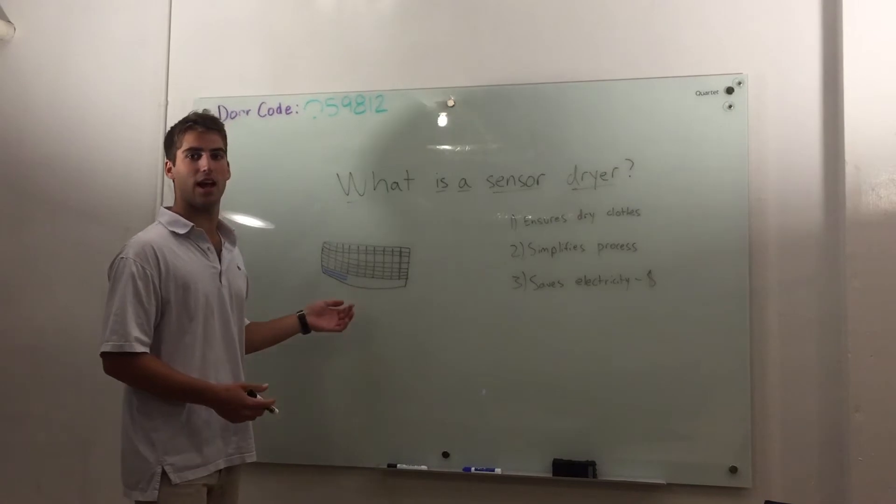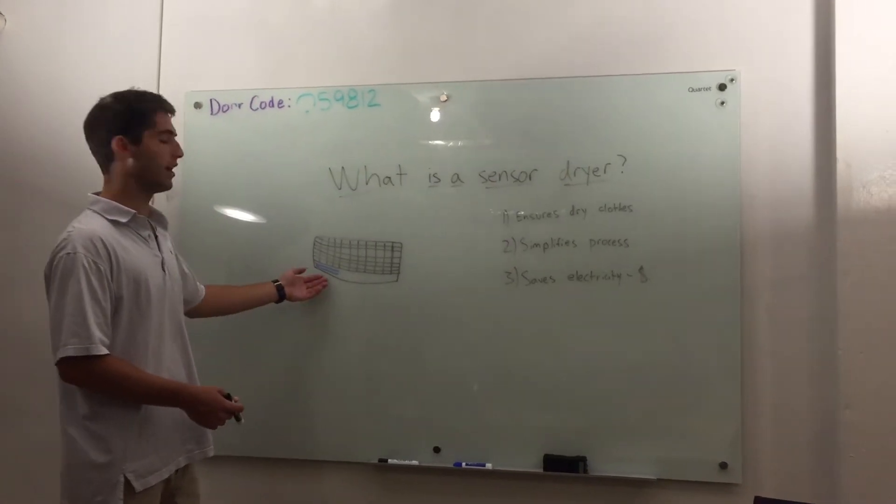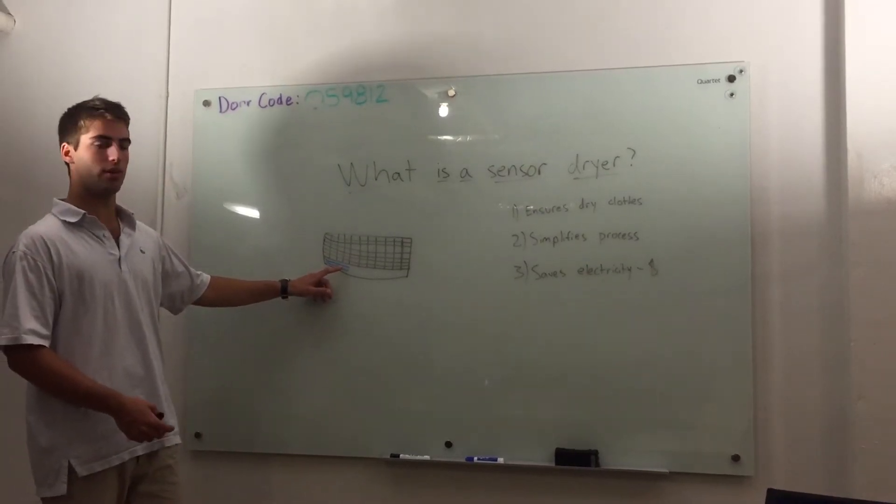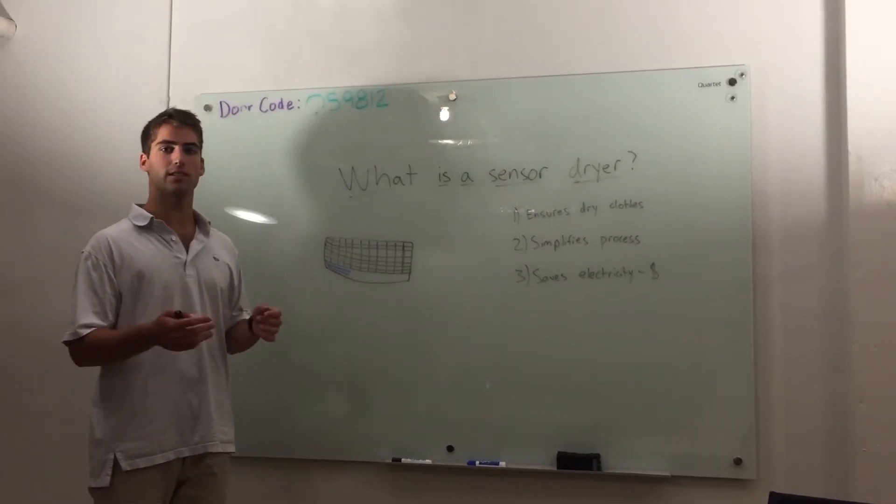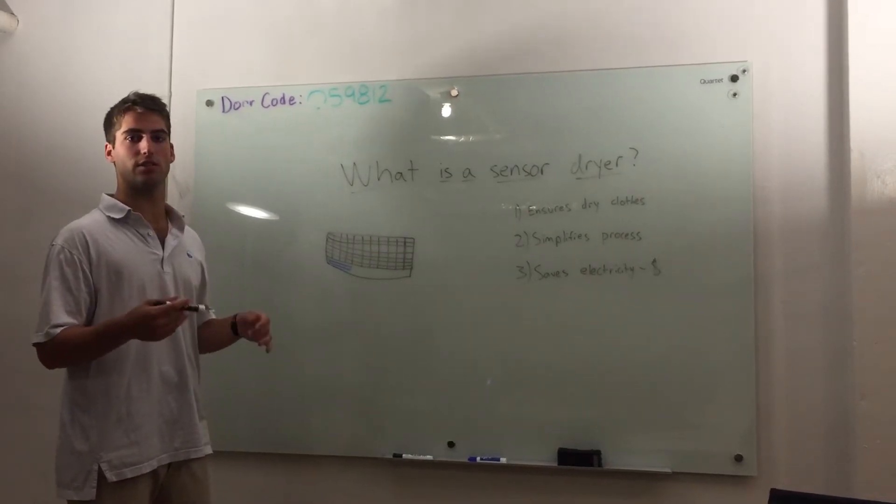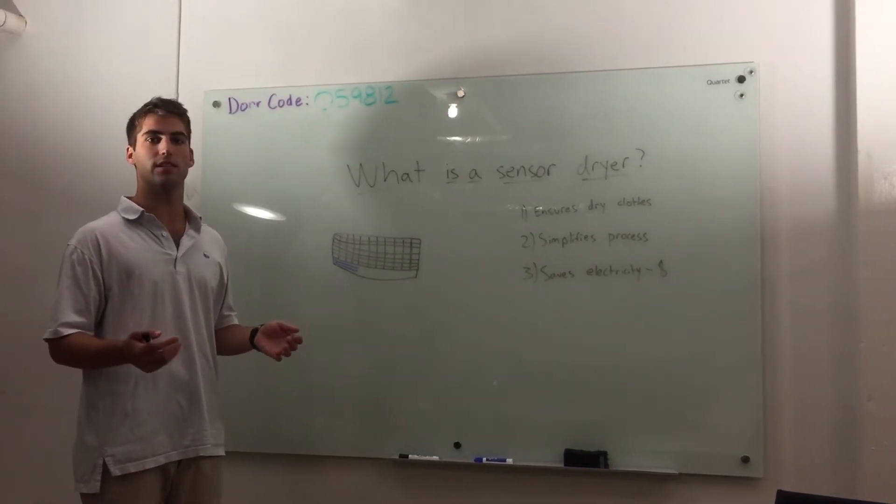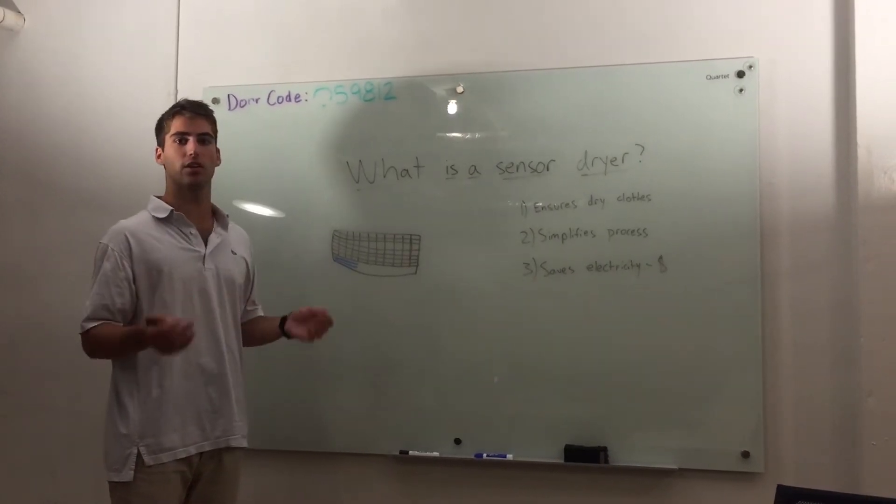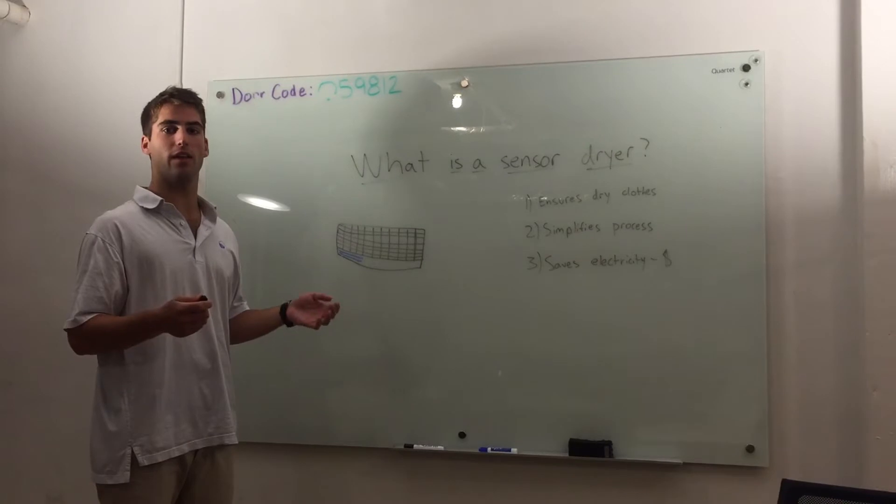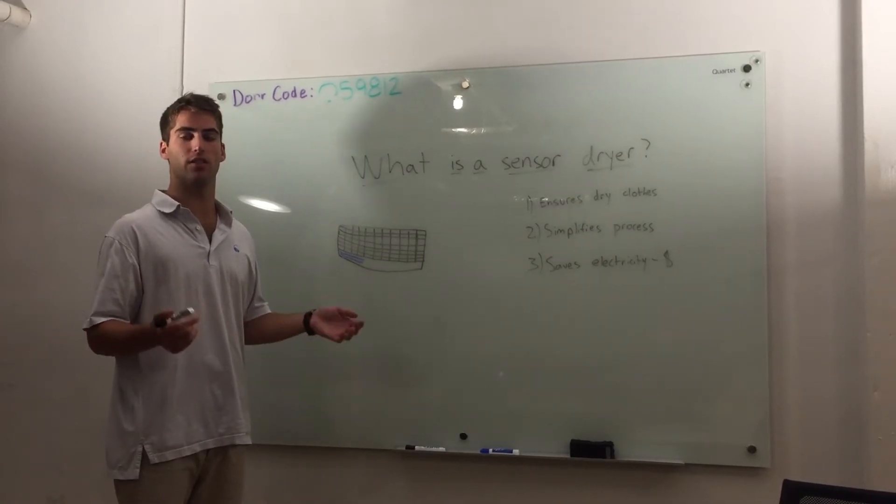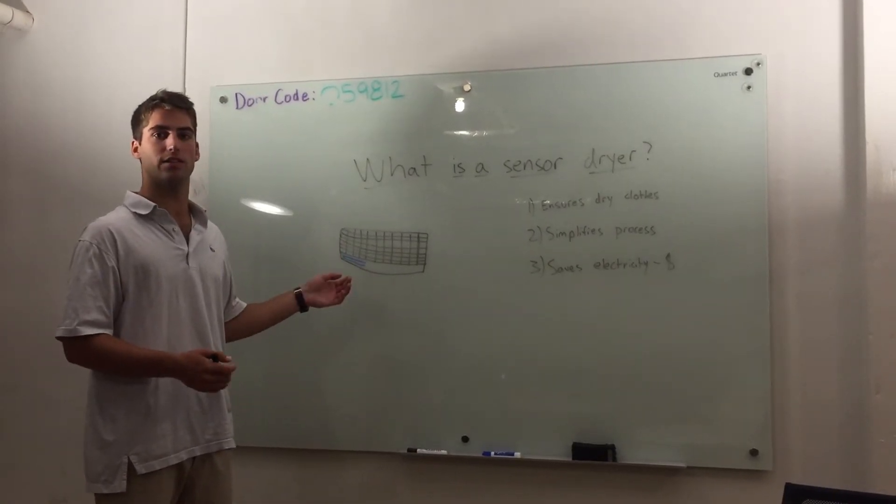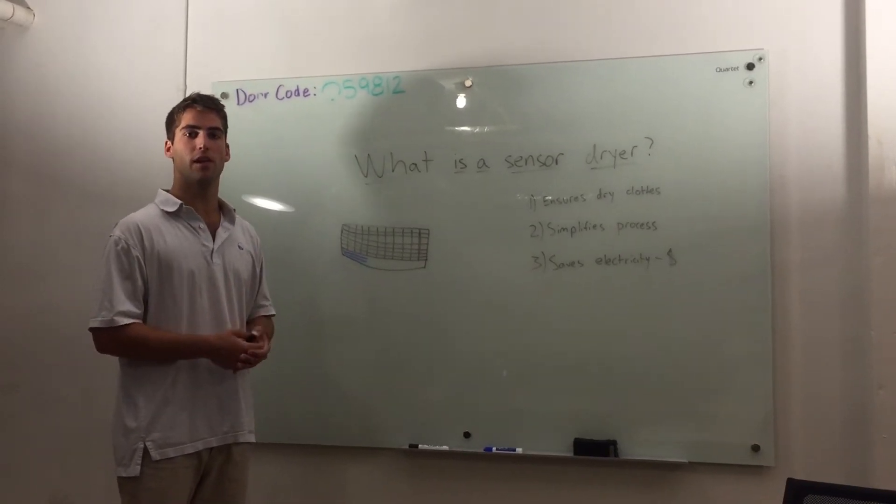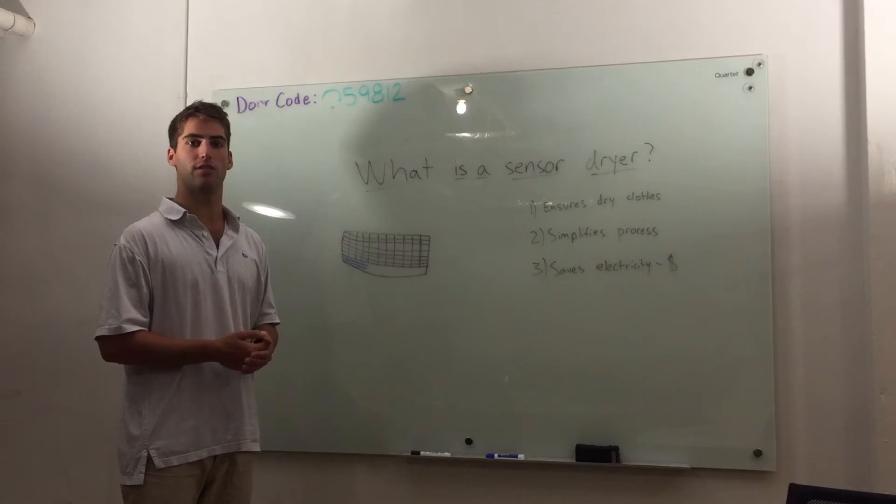One of the very common designs with the sensor dryer is this. A sensor dryer utilizes two metal bars as seen here in blue which has an electric current through them to ensure that the clothes are dry. So how it does this is when a piece of clothing rubs up against the metal bar it creates a closed circuit and when that clothes are moist the current is larger and as they dry out that current diminishes. Once the current diminishes the dryer knows to stop and then this dryer shuts off thus saving energy.